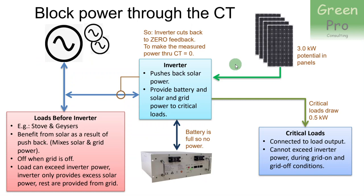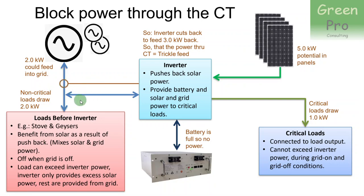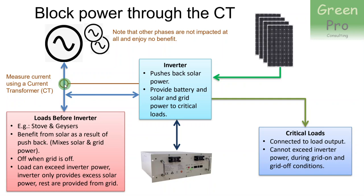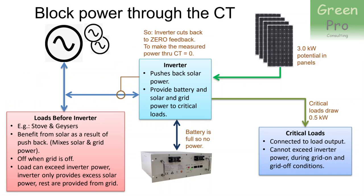The inverter cuts back to make the measured power through the CT equal to zero, meaning it's not feeding any loads before the inverter. This is the opposite of the intended use, where the inverter pushes power back to the devices before the inverter and controls the current going into the grid to zero. I hope this gives you some idea of how the CT interacts with the SunSync software and why you do not put the CT at the inverter. You have to put it where the power comes into the house, because that's the current it's going to be controlling. If you put the CT at the inverter output, it will control that to zero — and that is not what you want.